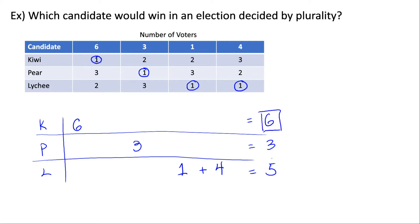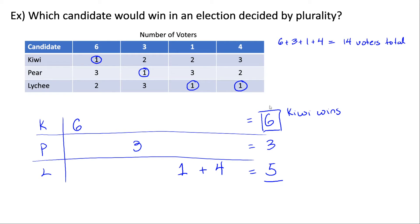Six is the highest number, so Kiwi wins by plurality. One way to check your work — in case you missed a column — is to add all the voter counts from the top row: six plus three plus one plus four equals 14. After tallying all candidates, their vote totals should also add up to 14. If it does, you didn't over-count or forget any votes, though you still could have made other mistakes.